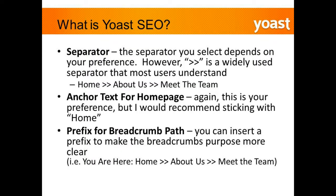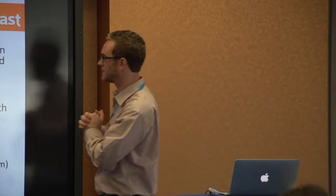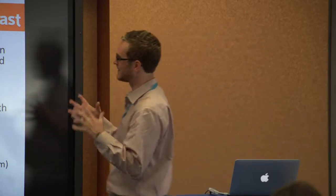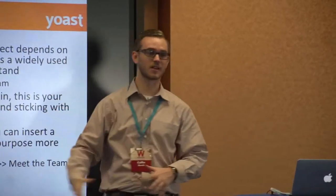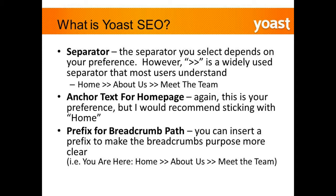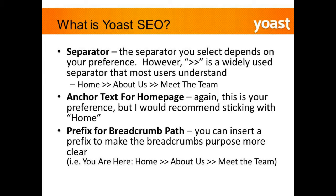The separator within breadcrumbs is your preference. I don't really recommend using pipes here — I tend to use the carets, which are widely recognized as a breadcrumb feature and kind of insinuate 'I was here, I navigated here, then I went here.' For the anchor text for the home page within your breadcrumb, you can alter it — I typically leave it as 'home' because everyone resonates with that. You can also add a prefix to the breadcrumb path, like 'You are here,' to make it clear.